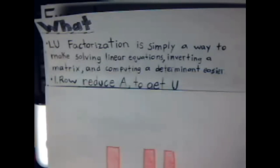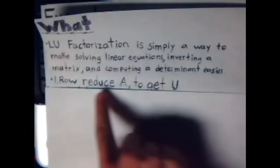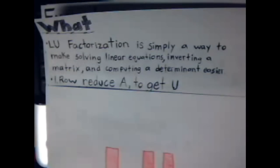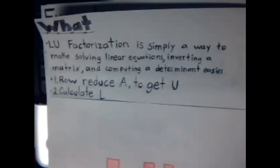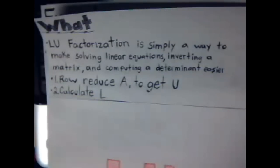Well, what do you do? First, you row reduce A to get U, and then you just calculate L. L, you don't even really have to calculate, you just have to look at what matrix operations you perform to get U, and that's how you get L. But I'll explain that in a little bit.